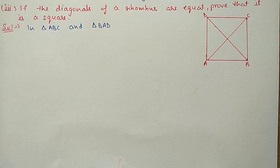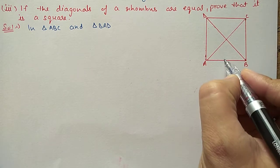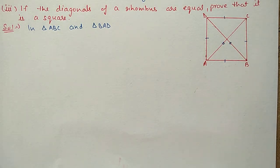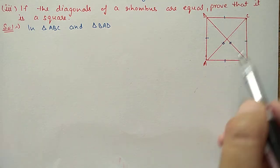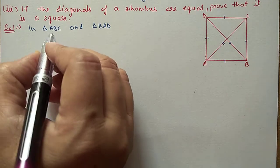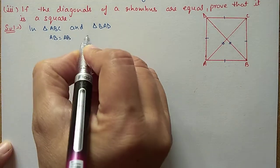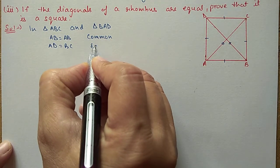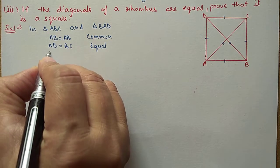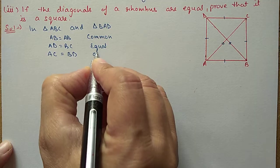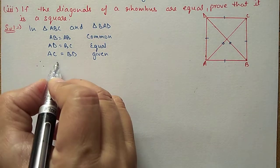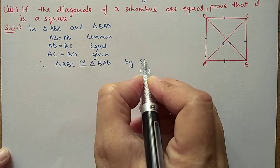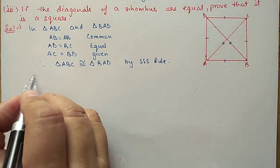Question 9 third part: If the diagonals of a rhombus are equal, prove that it is a square. ABCD is a rhombus, so all four sides are equal. Its diagonals AC and BD are also equal. We take triangle ABC and triangle BAD. In these two triangles: AB is common, AD equals BC (sides of rhombus are equal), and AC equals BD (diagonals are equal). By SSS rule, triangle ABC is congruent to triangle BAD.